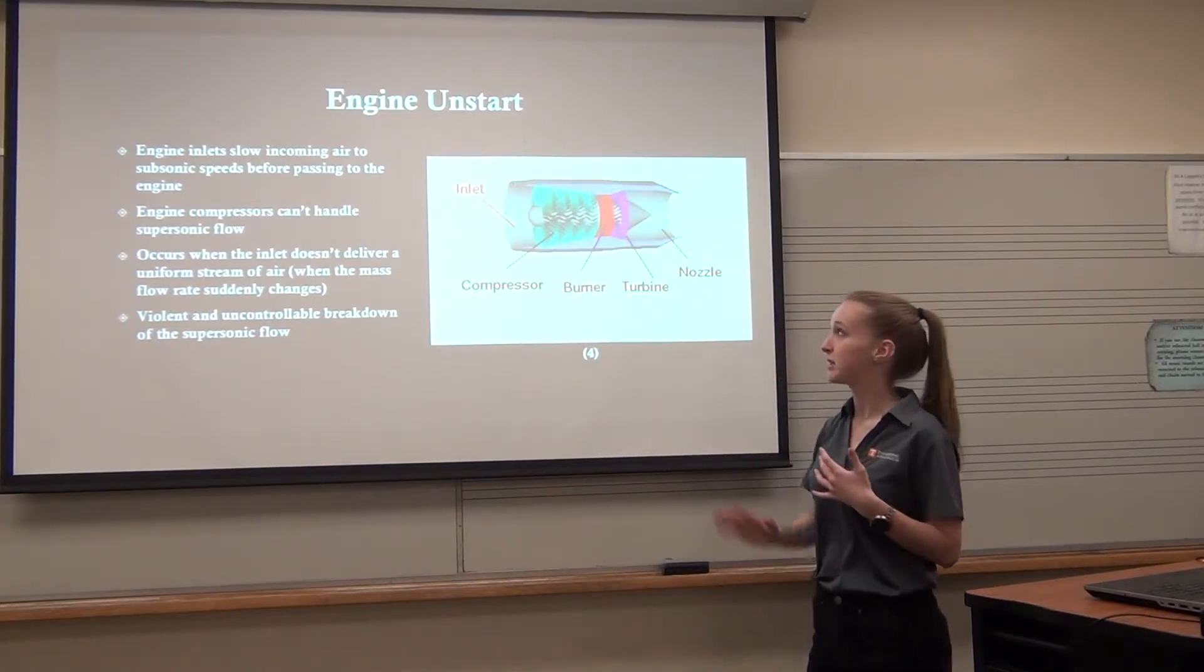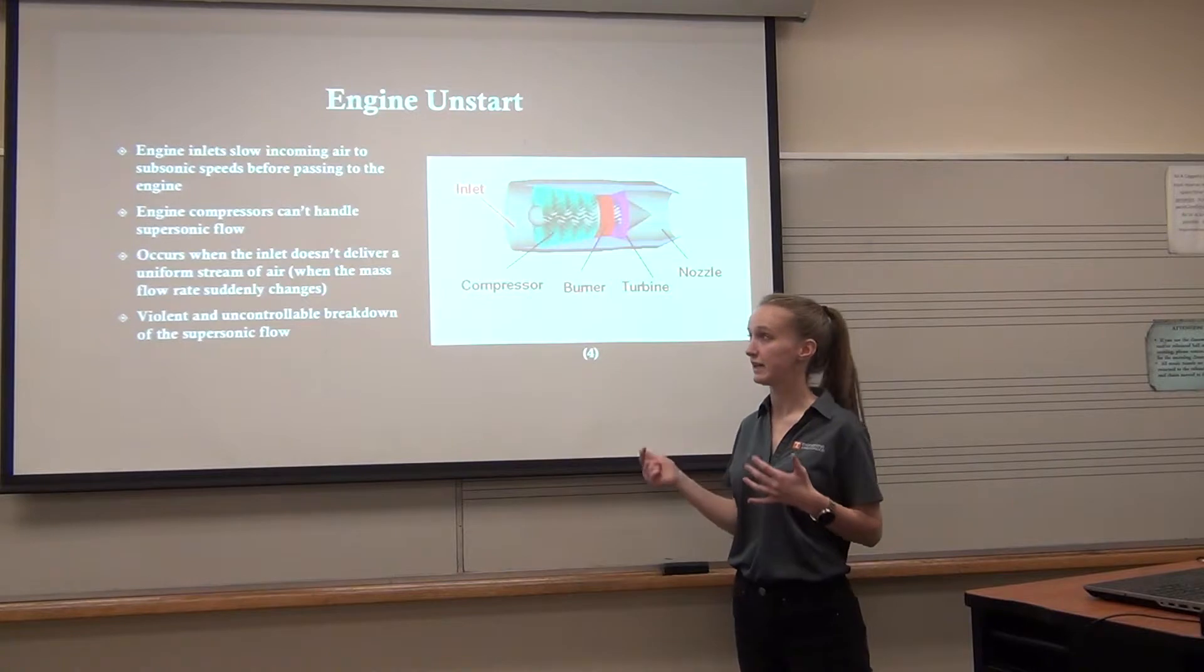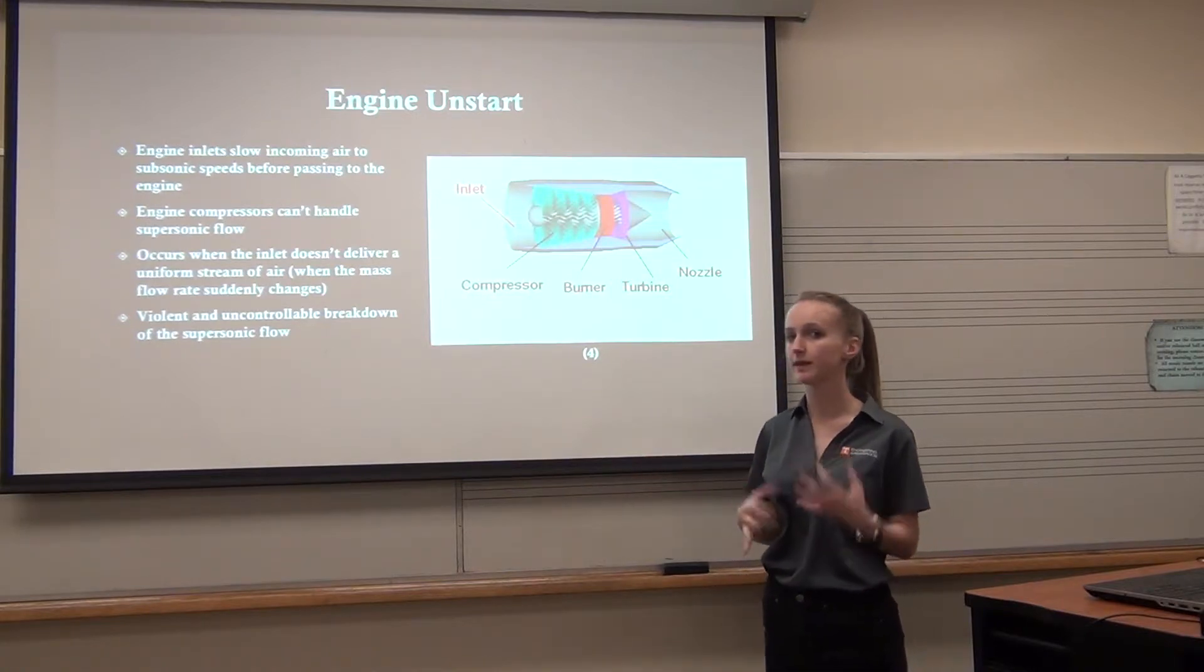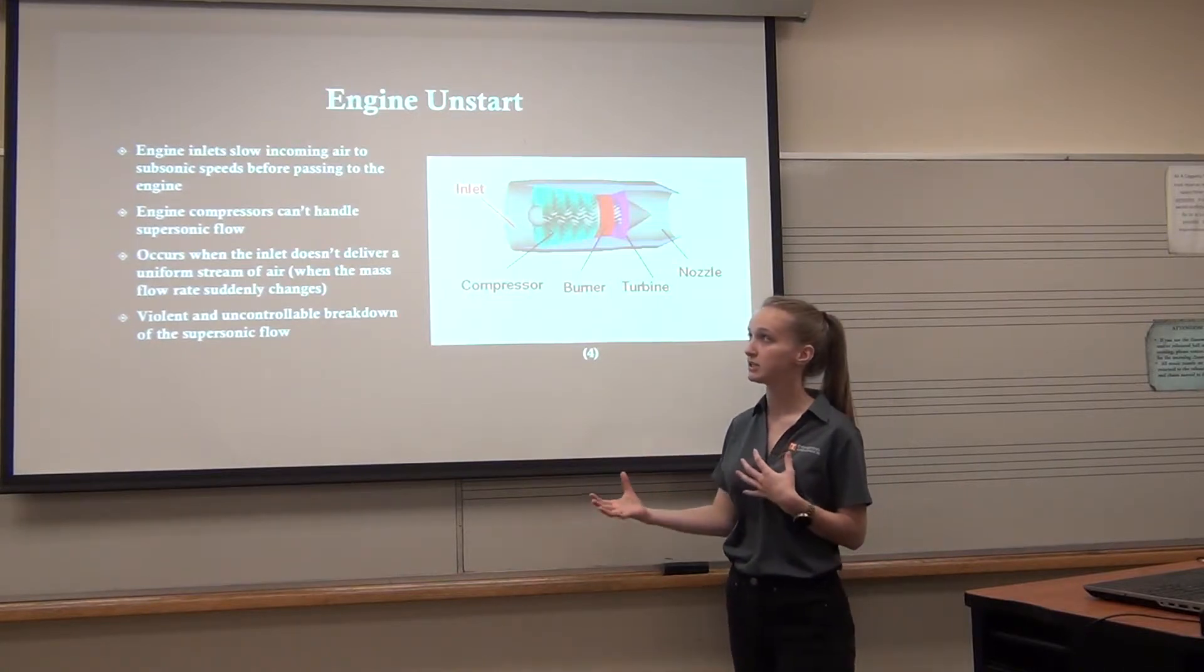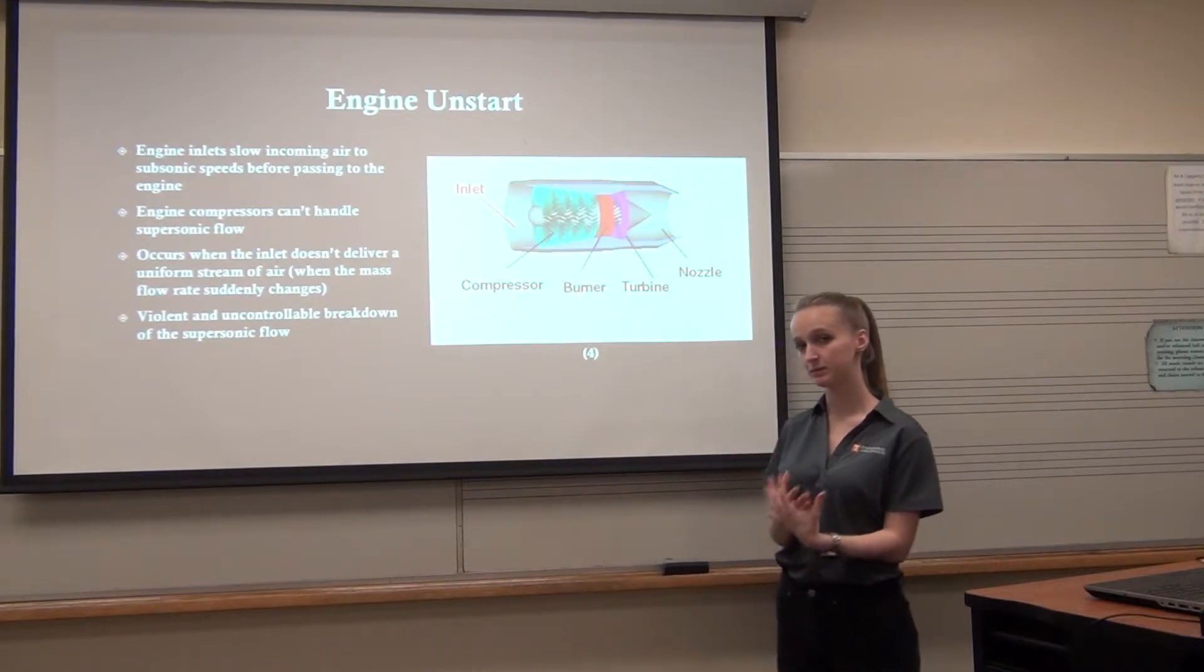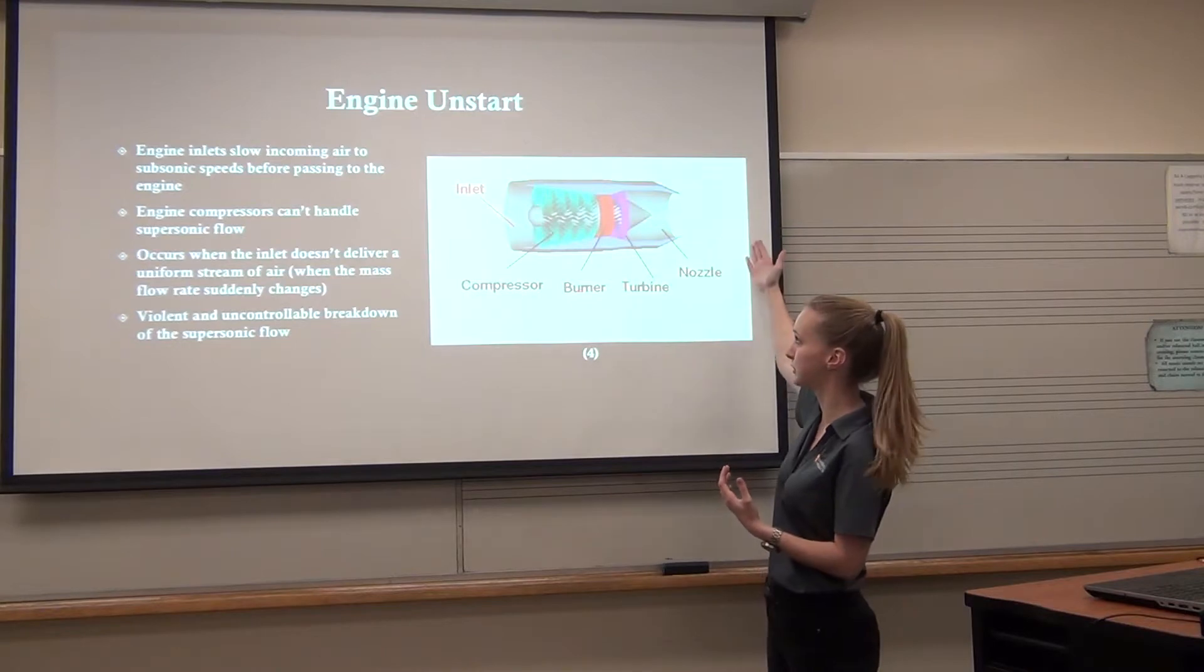An engine compressor has propellers that turn and they can't handle supersonic speeds. So when an aircraft is flying at supersonic speeds, the engine inlet has to slow that supersonic speed to subsonic speeds before the air can pass through to the engine.